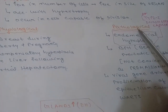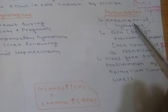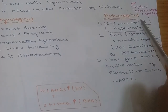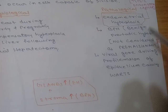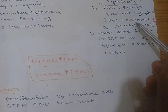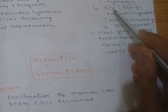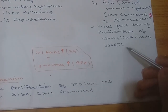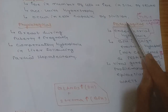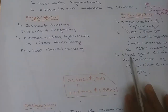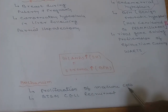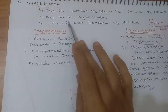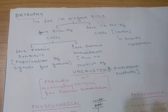Pathological hyperplasia: endometrial hyperplasia causes type 1 endometrial cancer. Benign prostatic hyperplasia (BPH) is not considered premalignant. Viral-driven proliferation of epithelium causing warts is another pathological example. The mechanism behind hyperplasia is increased proliferation of mature cells or stem cell recruitment. These two are the mechanisms behind hyperplasia.